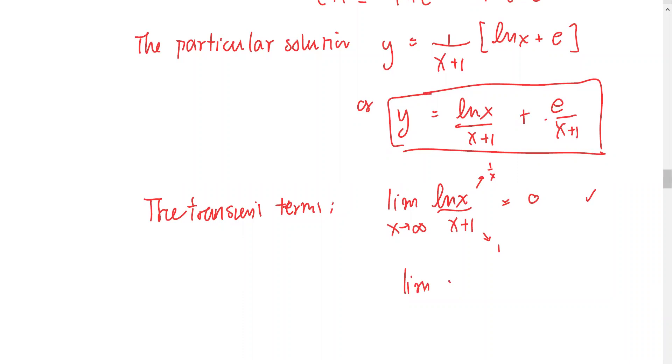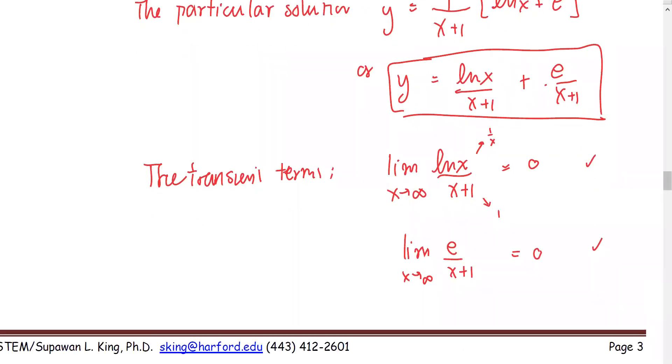Next, the limit of e/(x+1) as x approaches infinity will give you zero as well. So the transient terms are both ln(x)/(x+1) and e/(x+1).